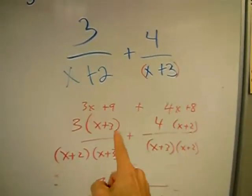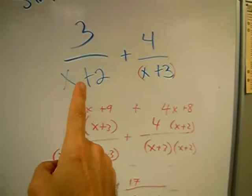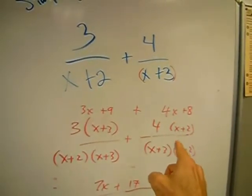There's the X plus 3, and we multiplied it top and bottom. The X plus 2, yep, multiplied top and bottom.